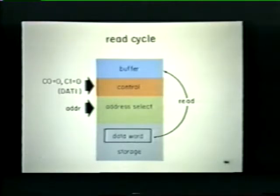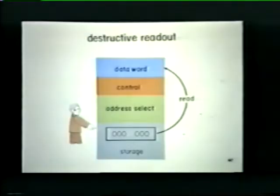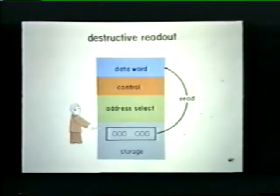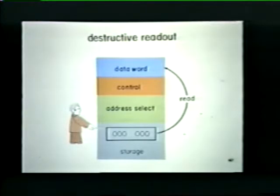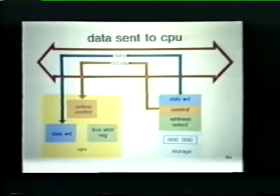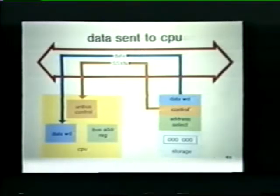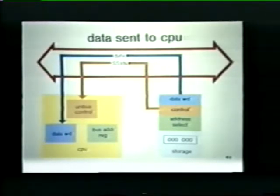The memory unit reads the data word from the storage location and temporarily holds the word in its buffer register. Notice that as the data word is read from storage, the contents of the address location are changed to zeros. This is a characteristic common to all core memory units — they are destructive readout devices. The data word has now been read from its storage location. Next, the memory unit takes the word from its buffer register and places it on the unibus. The memory unit also issues its slave sync (SSYN) signal to inform the processor that the data word is available on the bus.